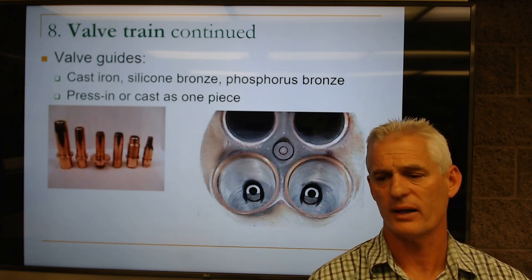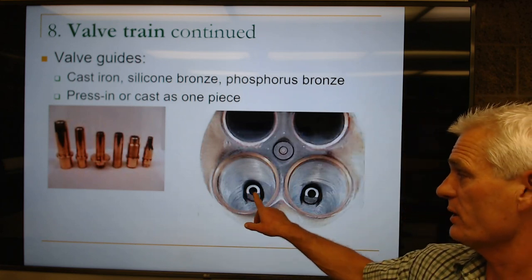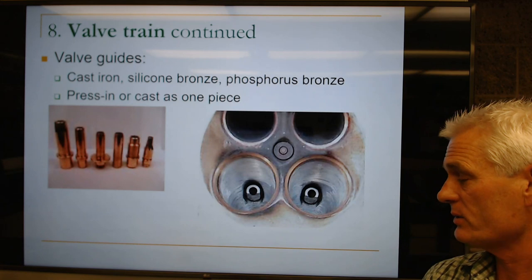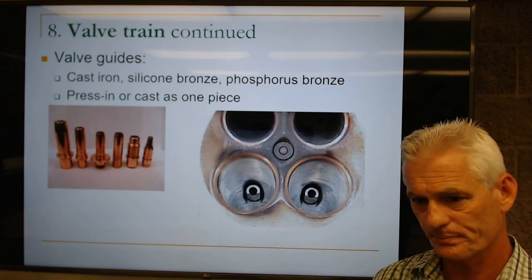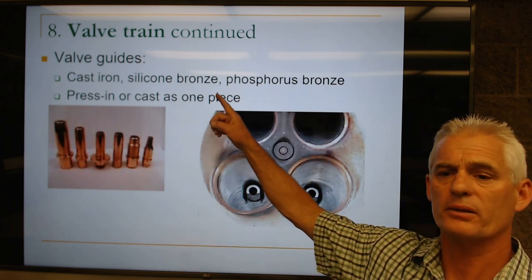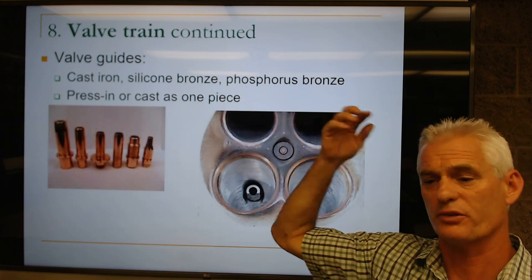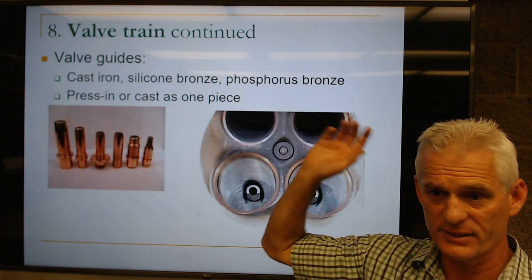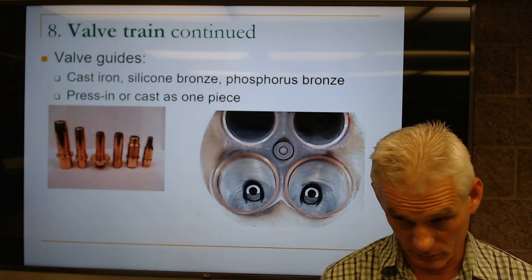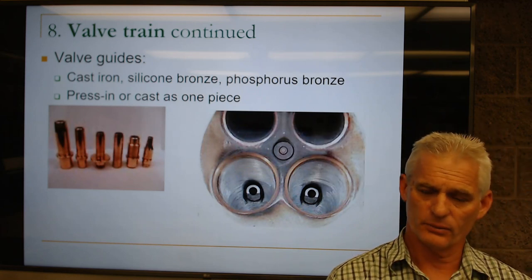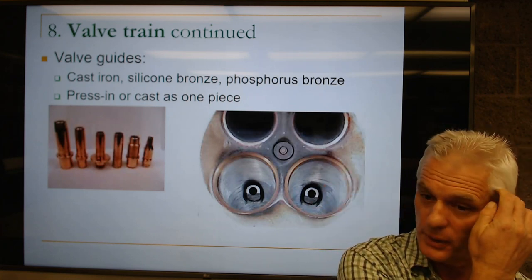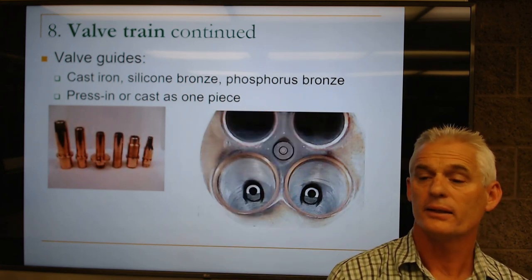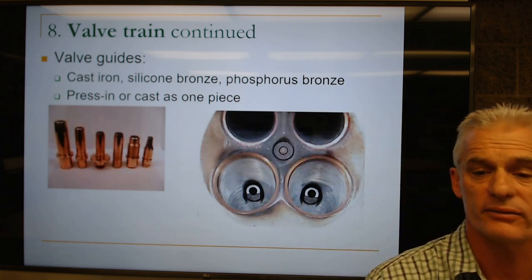Valve guides are the tubes that locate the valve so it sits down properly on the seat, sealing compression and allowing the valve to cool. Guides can be made of cast iron, silicon bronze, or phosphorus bronze. Silicon and phosphorus bronze are very tough materials — phosphorus bronze in particular — but they can tend to wear the valve stem out, whereas cast iron doesn't usually. We like cast iron because under a microscope its granular, wavy structure holds oil in the voids and lubricates as the valve moves up and down.